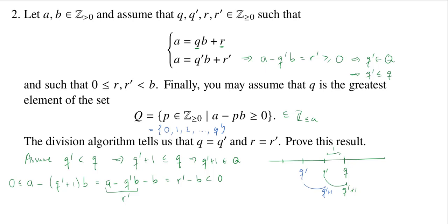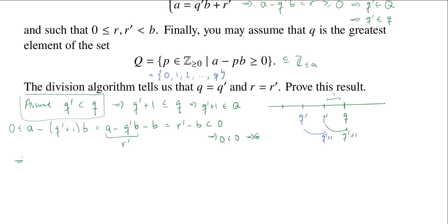Yeah, that would tell us 0 is less than 0. And that's definitely a contradiction. Where does the contradiction come from? It came from our assumption that Q prime was strictly less than Q. So from here, we're able to conclude that Q prime is equal to Q.